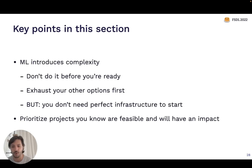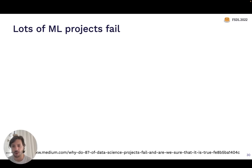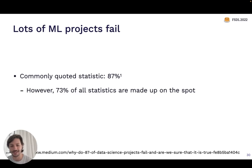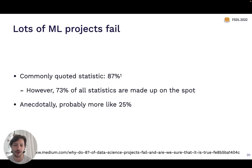Machine learning projects have a higher failure rate than software products in general. The statistic you'll see most often is that 87% of machine learning projects fail — though it's worth noting that 73% of all statistics are made up on the spot, so this one is a little questionable. Anecdotally, from what I've seen, it's probably more like 25% — still a very high number, still a very high failure rate, but maybe not the 90-ish percent that people are quoting.